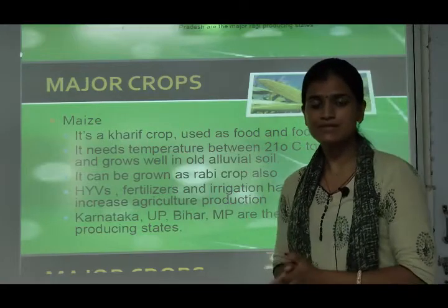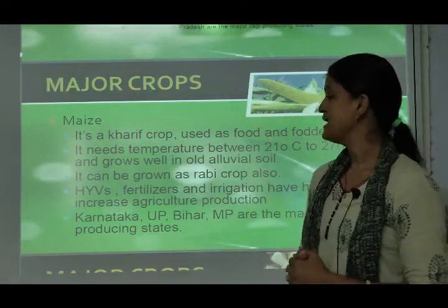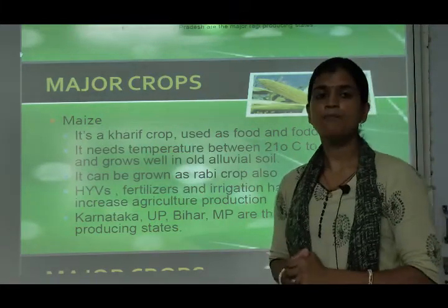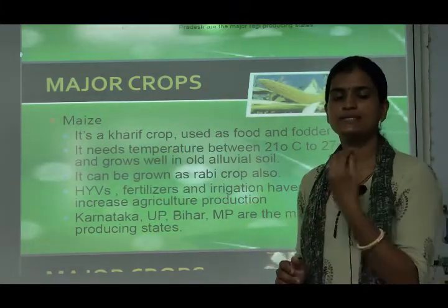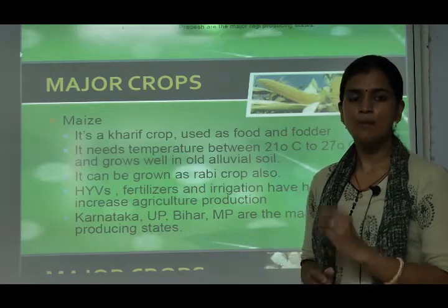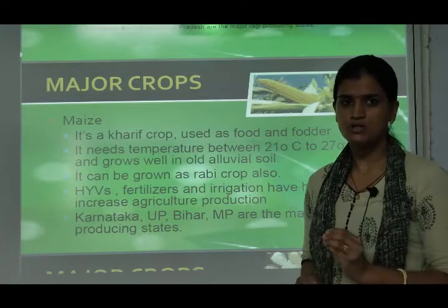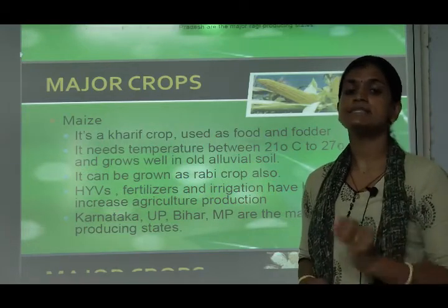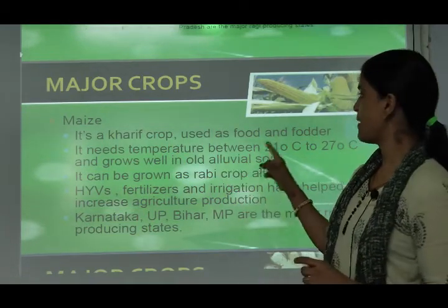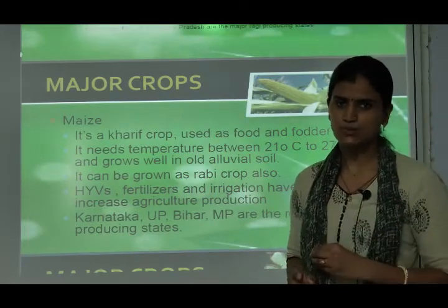Next is maize. Maize is a kharif crop used as food and fodder. As discussed in the previous lecture, kharif crops start at the onset of monsoon and are harvested in September and October. Maize is used as food and also as fodder for animals.